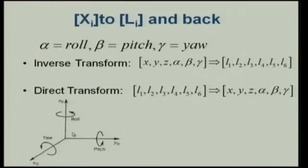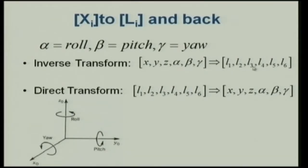We define alpha as roll, beta as pitch, gamma as yaw, so the notation becomes compact. We call the combination of x, y, z, alpha, beta, gamma as xi, and the leg lengths as li. We need to go from the platform pose to the leg lengths and back — that is the definition of roll, pitch, and yaw.